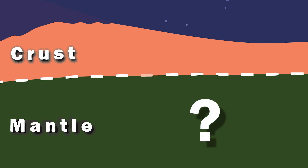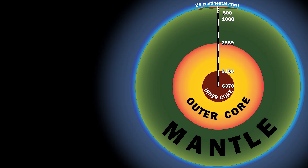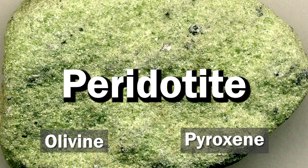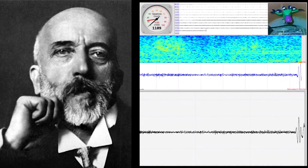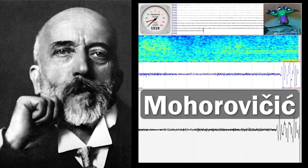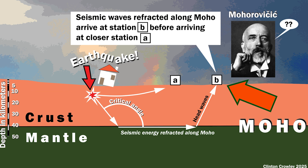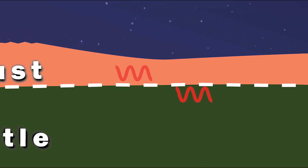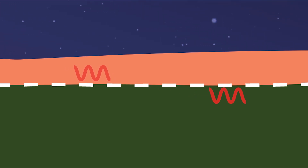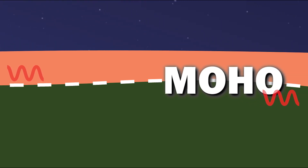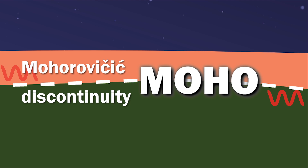What lies beneath the crust? Below the crust is the mantle, a huge body of dense rock that makes up two-thirds of planet Earth. Mantle rocks have a different chemical composition from crustal rocks; mantle rock is called peridotite, consisting of iron and magnesium-rich minerals like olivine and pyroxene. In 1909, a scientist named Mohorovicic analyzed seismic waves from an earthquake in Croatia. He discovered the crust-mantle boundary when seismic waves from an earthquake arrived at distant seismic stations before they arrived at stations closer to the earthquake. Mohorovicic realized that much denser rocks lay below the crust, separated from it by the crust-mantle boundary. That boundary is called the Mohorovicic discontinuity, or MOHO for short.